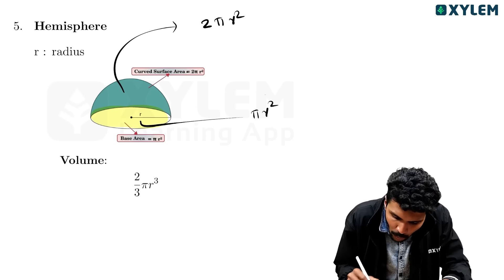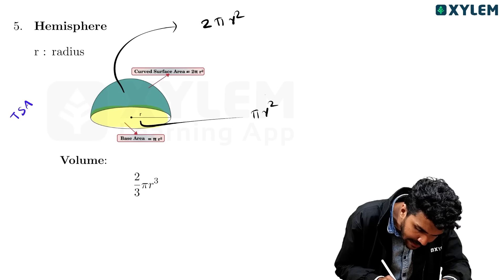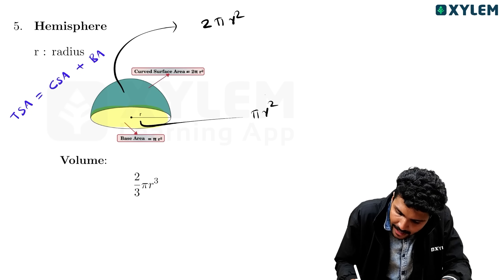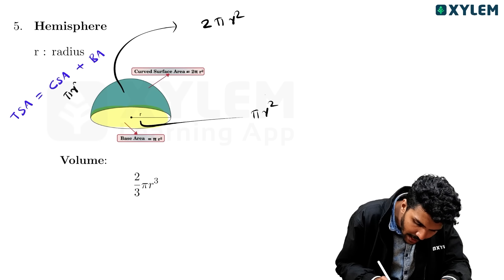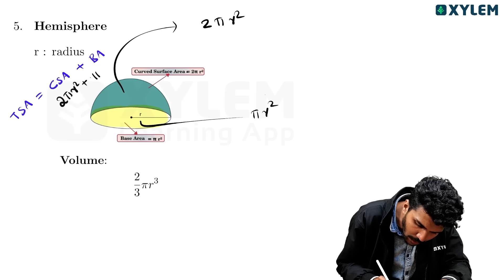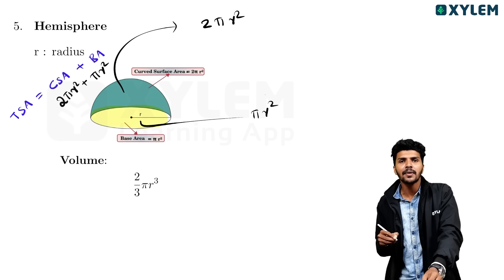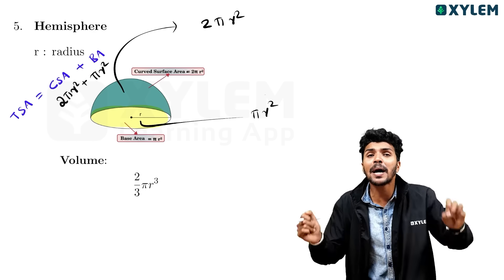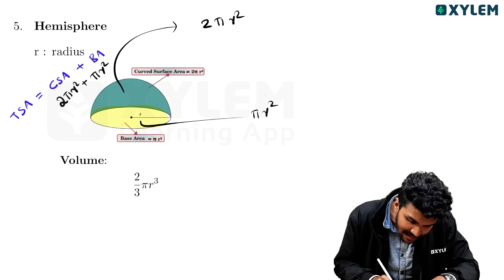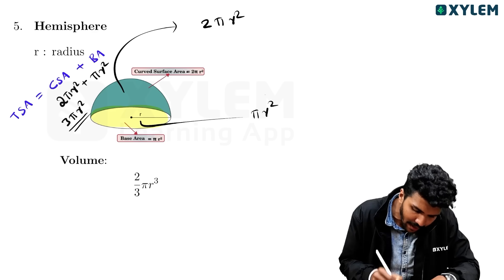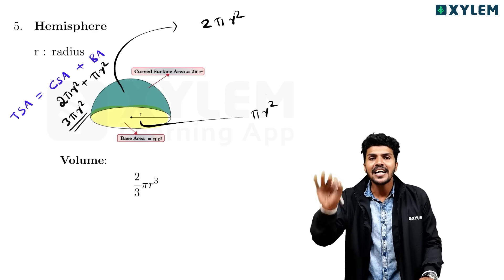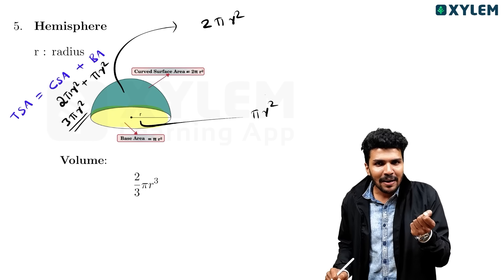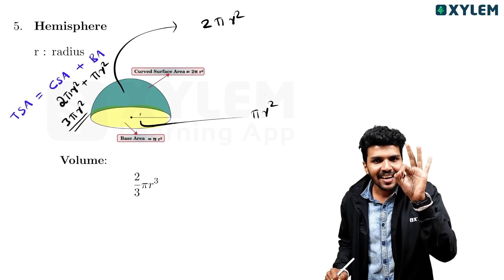For the hemisphere: curved surface area plus base area. That's 2 pi r squared plus pi r squared. Curved surface area is 2 pi r squared, base is pi r squared, so total surface area is 3 pi r squared. Total surface area equals 3 pi r squared.